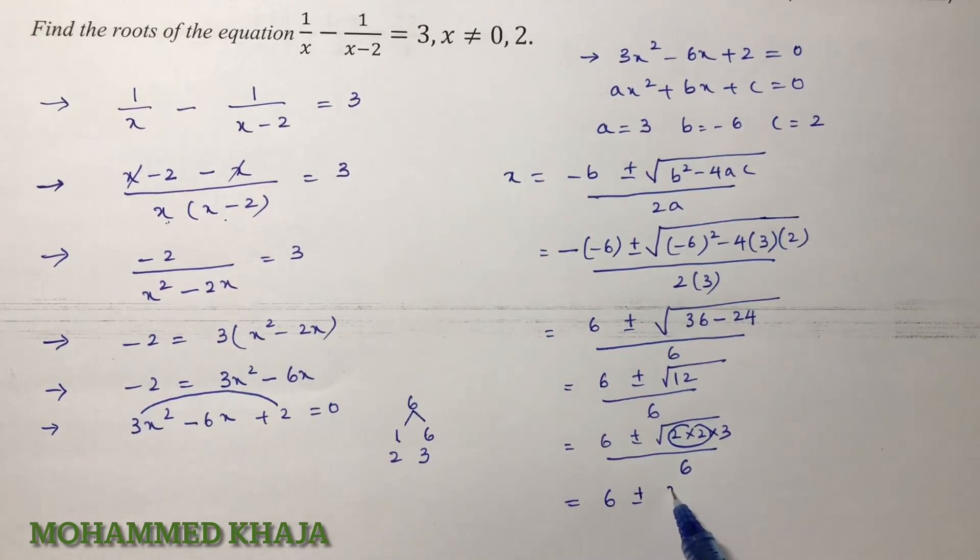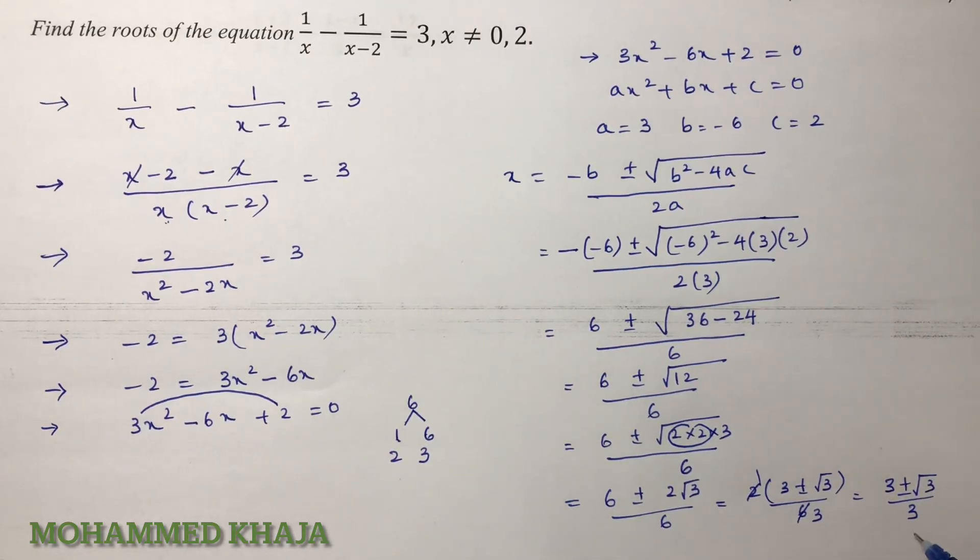Now in the numerator take 2 common. 2(3 ± √3)/6. 2 times 1 is 2, 2 times 3 is 6, so (3 ± √3)/3. So the two values are (3 + √3)/3 and (3 - √3)/3.